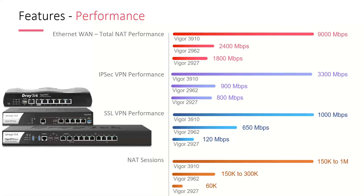Looking at performance, the 3910 is the top of the range. It supports 10 gig total throughput or 9 gig for a single WAN connection — that's why we publish two figures. If you had just one WAN connection, you'd get about 9 gig on that. Comparing to other models, if you wanted multiple full-fiber connections, the 3910 with load balancing is really the appropriate choice. With the 2927, for example, you'd have a few hundred meg; the 3910 has that extra horsepower.